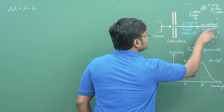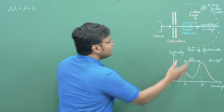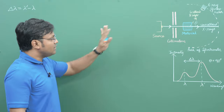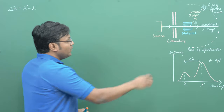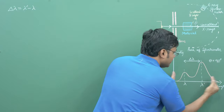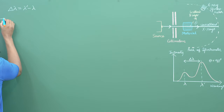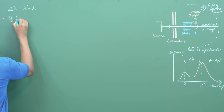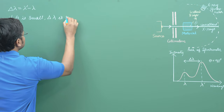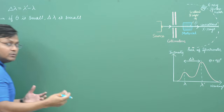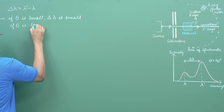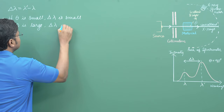When you expose a material with incident x-rays of wavelength λ, in the scattered radiation you find an additional wavelength λ' which is greater than λ by some amount. This wavelength shift depends on the angle: for small angles the shift is very small, and for large angles the shift is very large. So if θ is small, Δλ is small; if θ is large, Δλ is large. This shift in wavelength between the scattered and the incident radiation is known as the Compton shift.